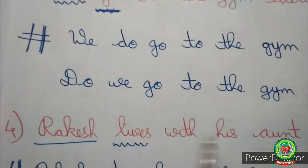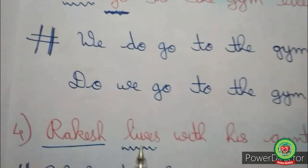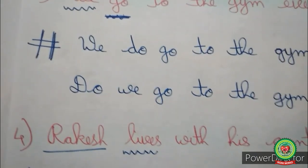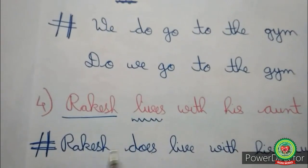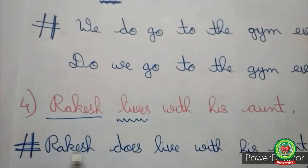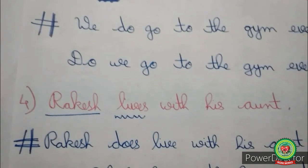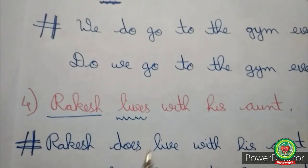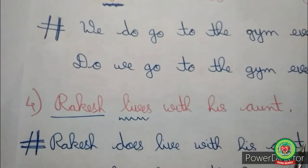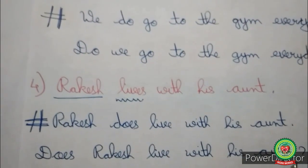See the fourth example: 'Rakesh lives with his aunt.' Lives is the present form of verb and Rakesh is a singular subject, so we add does as the helping verb: 'Rakesh does live with his aunt.' Placing does at the beginning: 'Does Rakesh live with his aunt?'